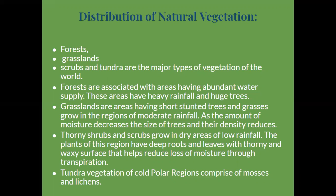In our country, the original plant cover consisted of forests, grasslands, shrubs, and tundra. The distribution of natural vegetation — forests, grasslands, shrubs, and tundra — represents the major types of vegetation of the world.